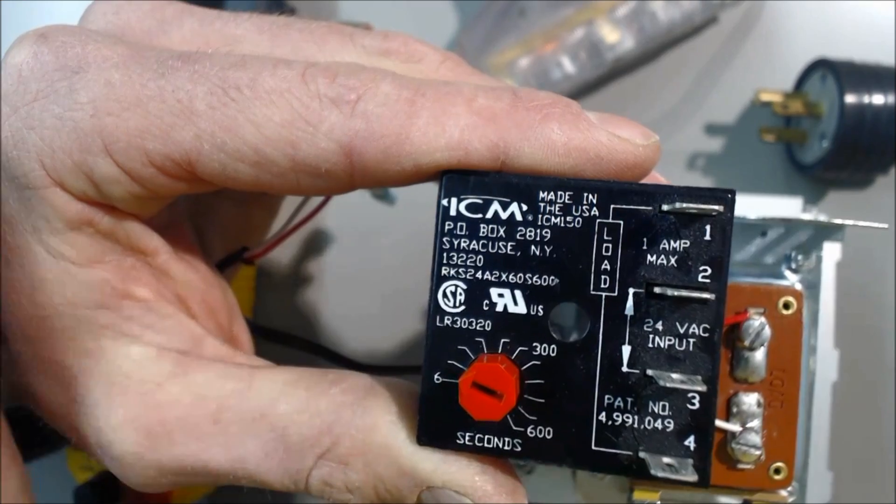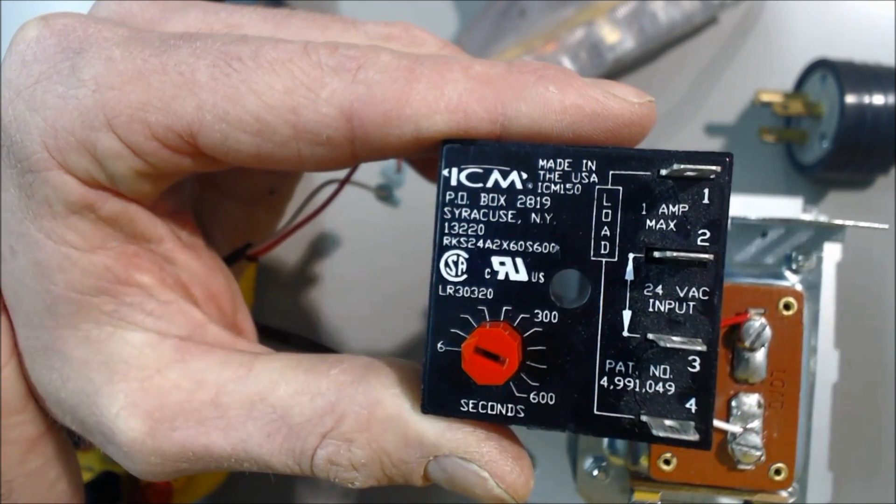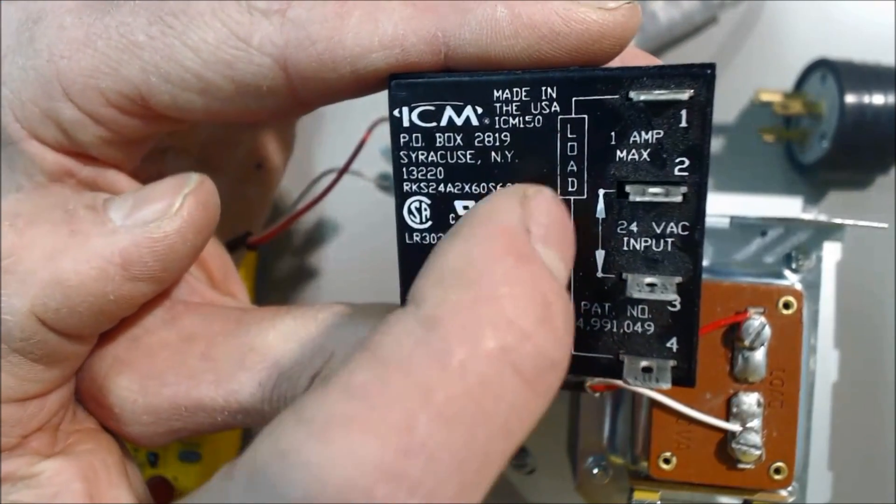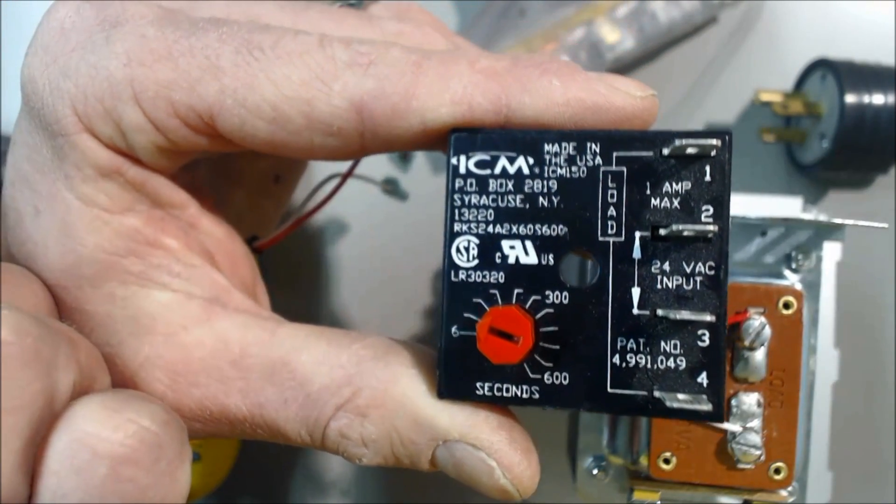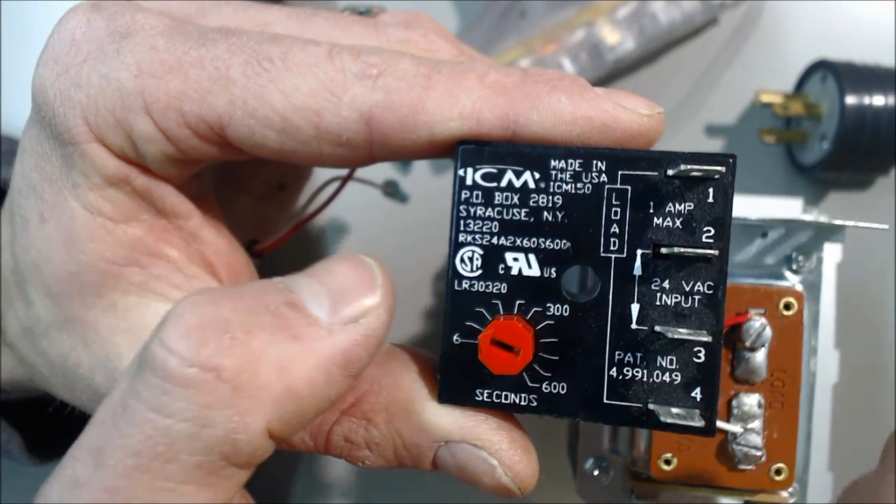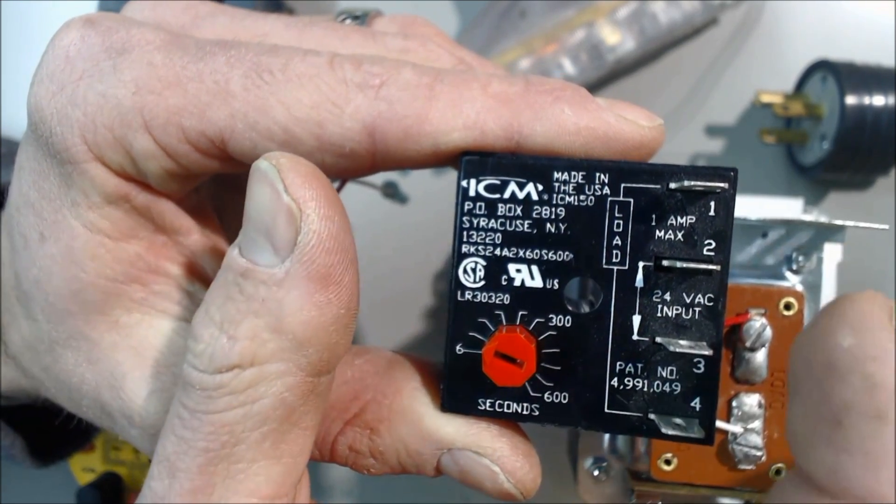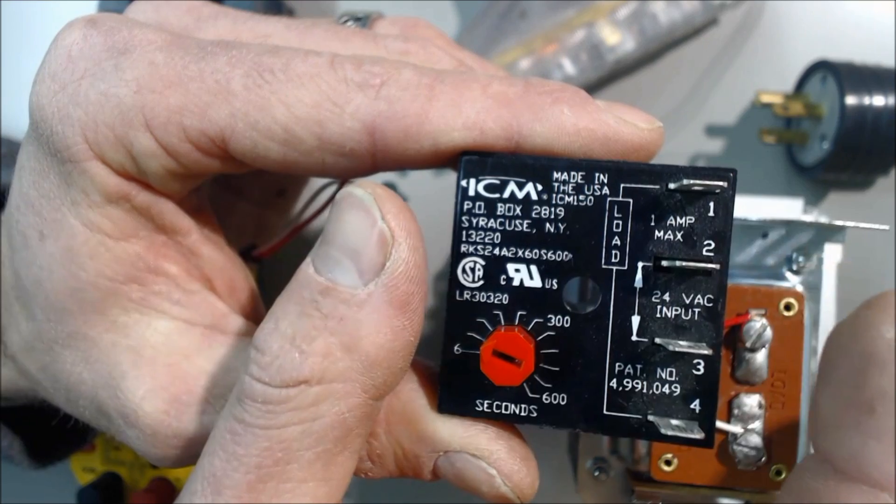This would normally be used for outdoor condensing units in the electrical compartment. You would just put a screw through here into the shroud inside the compartment, and you would take your 24 volts coming in. Normally it's a white and red wire, indicating one is a cooling wire and one